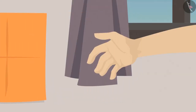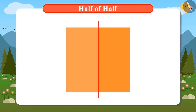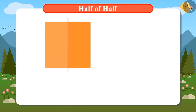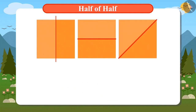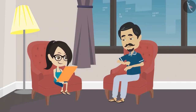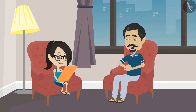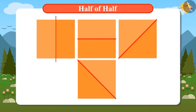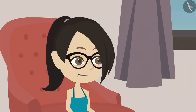You have already divided it into half in one way. I can divide it into half in three different ways — like this, like this, and like this. Absolutely correct, Vandana. Now, divide these halves further into equal parts in different ways.